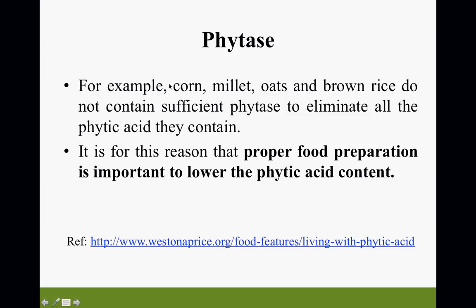For example, corn, millet, oats, and brown rice do not contain sufficient phytase to eliminate all the phytic acid they contain. It is for this reason that proper food preparation is important to lower the phytic acid content. The proper food preparation is low, slow, continuous heat — because if you raise the temperature above 170 degrees you destroy phytase, which is the enzyme.